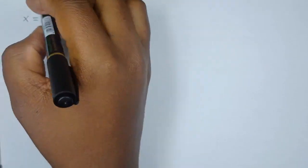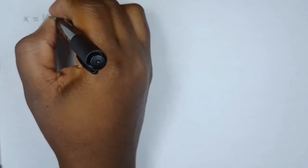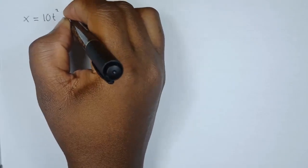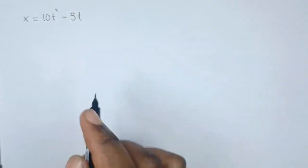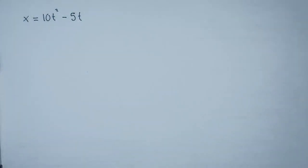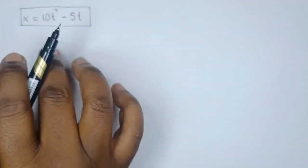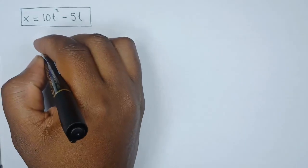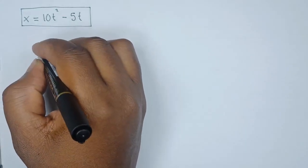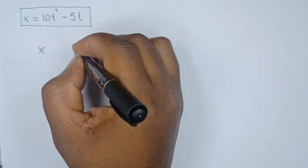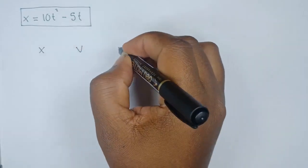For this particular question, we have been given an expression for position or displacement, which is given by x equals 10t squared minus 5t. Now, before we go into solving, there's something I need to show you. We use x for position or displacement, v for velocity, and a for acceleration.